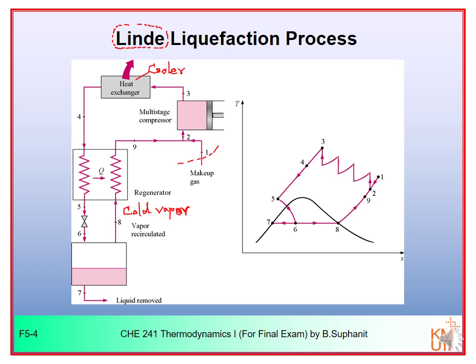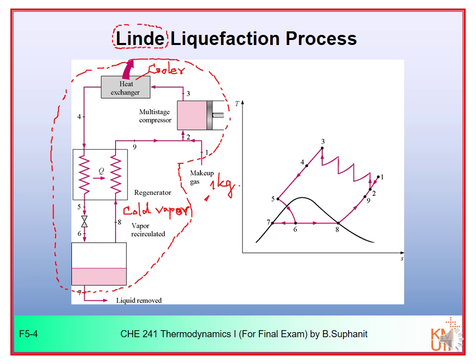If you draw the boundary of the system — the control volume — you can see that when you consider the overall system, you have only one inlet and one outlet. So for every one kilogram of gas that you feed, you will obtain one kilogram of liquid.